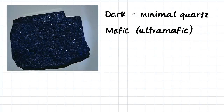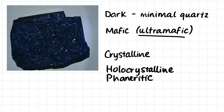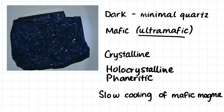Here we have another very dark igneous rock with minimal quartz. I would say that it is mafic to ultra-mafic, probably more ultra-mafic. It is a crystalline rock — holocrystalline — and has a phaneritic texture. It is formed from the slow cooling of a mafic magma. This sample is similar to the sample just before as it is formed from a mafic magma, however this one is intrusive while the other was extrusive. This rock we would call gabbro.